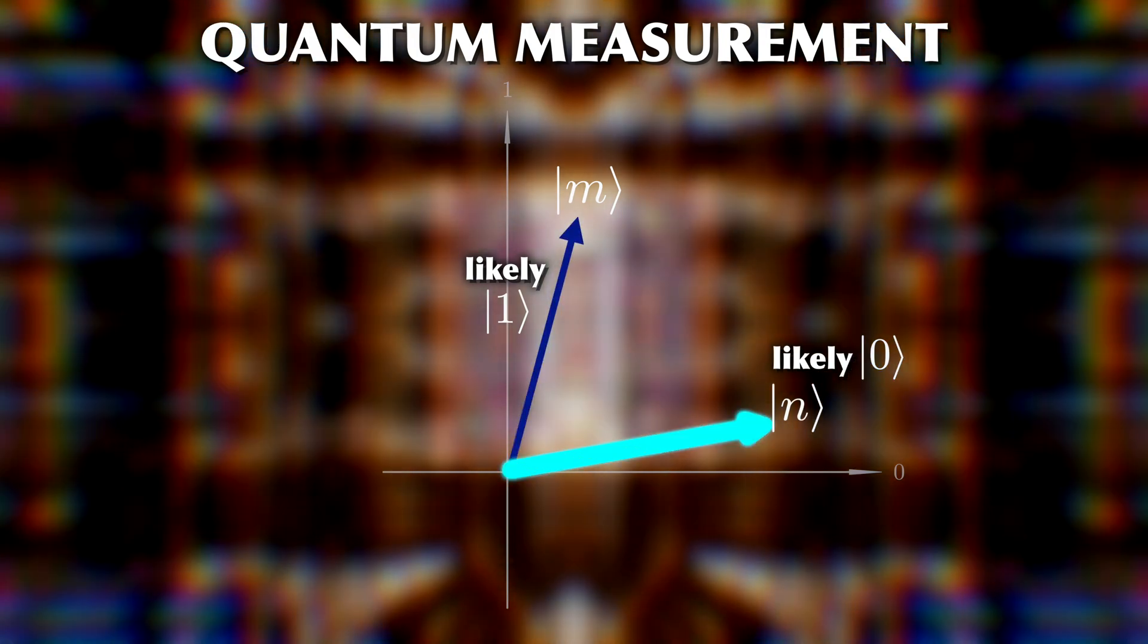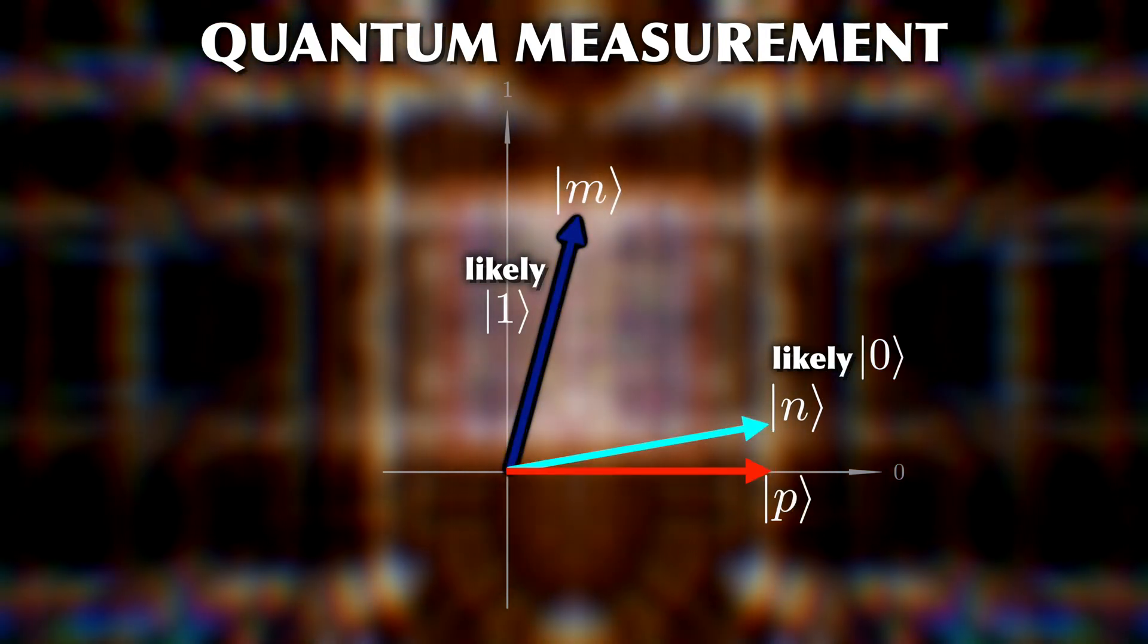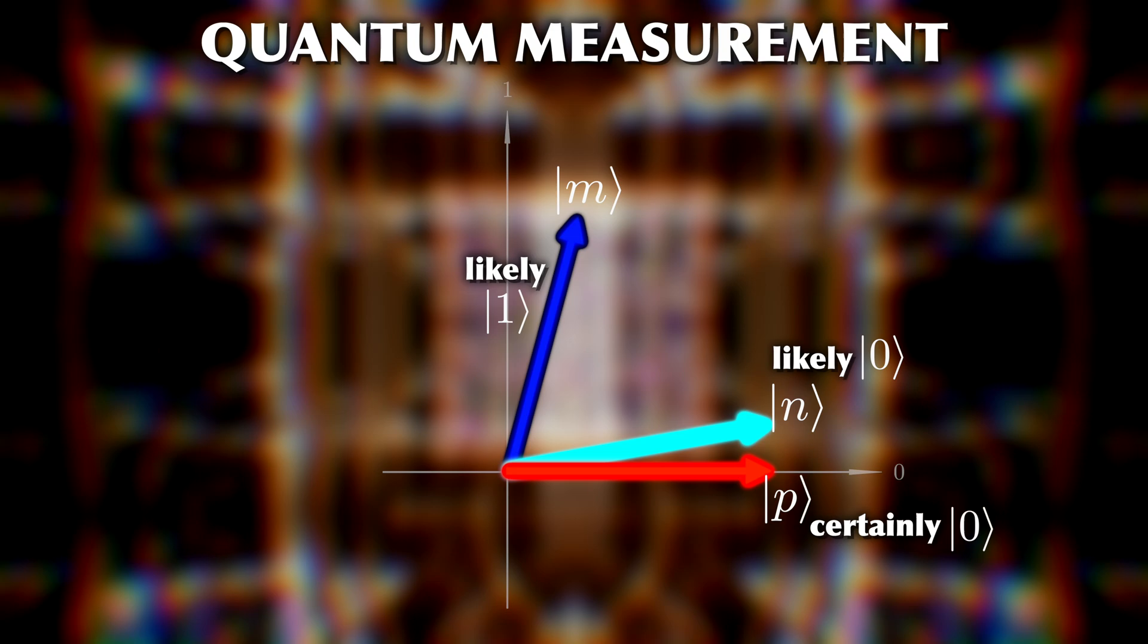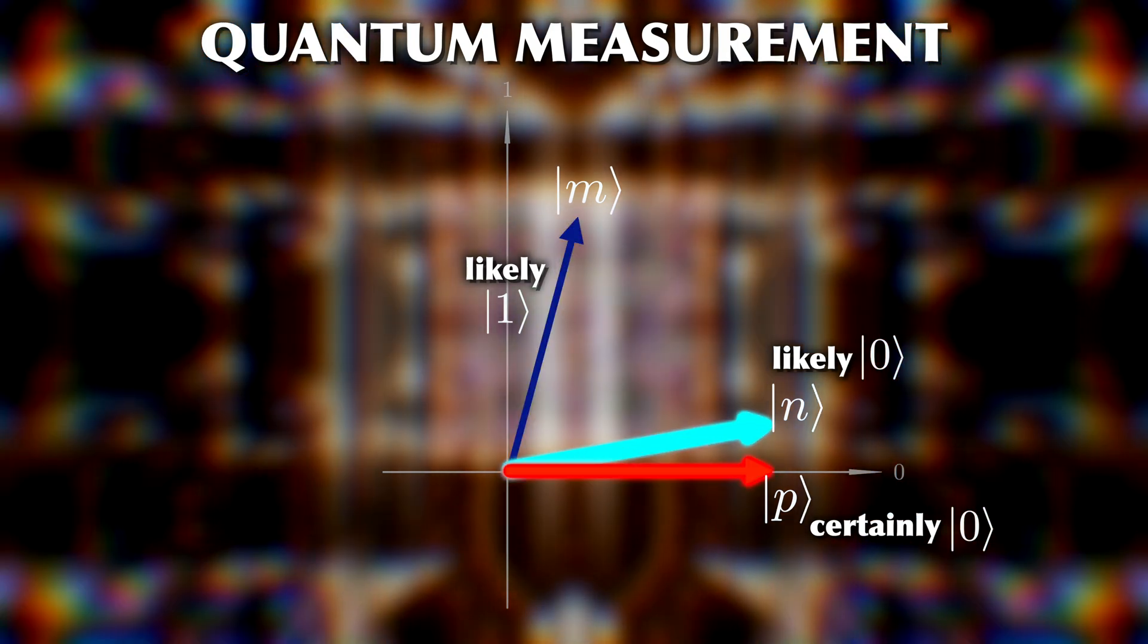This also means that if a state already is in a basis state, you will get that result with 100% probability. So, if you have many identical copies of a quantum state, you can predict the distribution of the measurement outcomes. But each individual measurement will be random and you can only give the probability for each outcome.